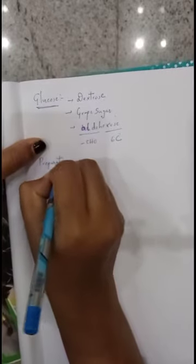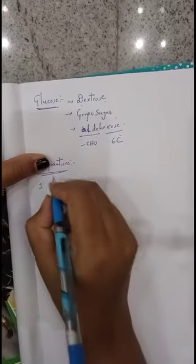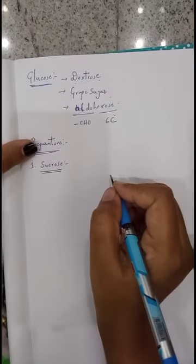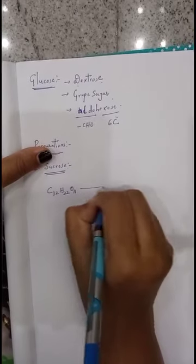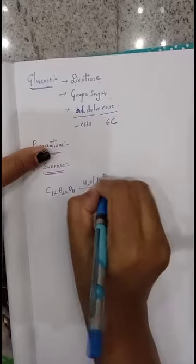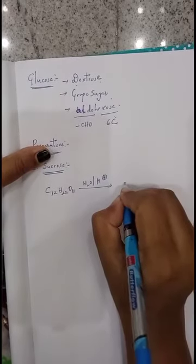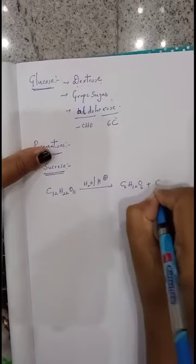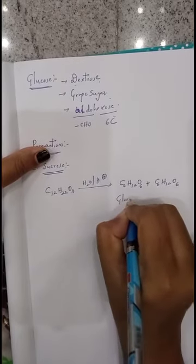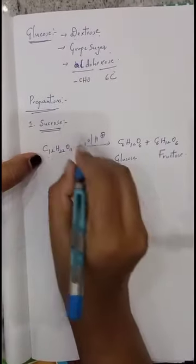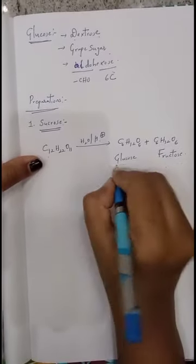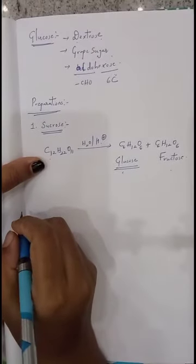Now we want to discuss about glucose preparations. There are two important preparations of glucose. First preparation is from cane sugar, or sucrose. When sucrose (formula C₁₂H₂₂O₁₁) undergoes hydrolysis in presence of an acid, it can be converted into two monosaccharides: C₆H₁₂O₆ plus C₆H₁₂O₆ — one is glucose and the other one is fructose. This is one method to prepare glucose.